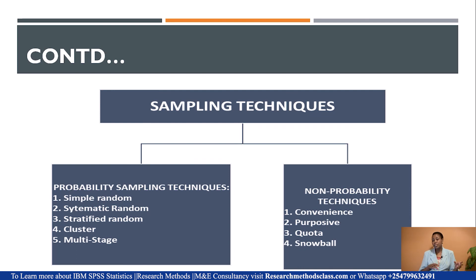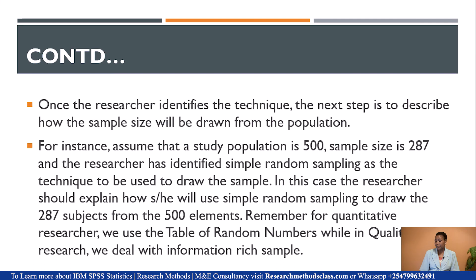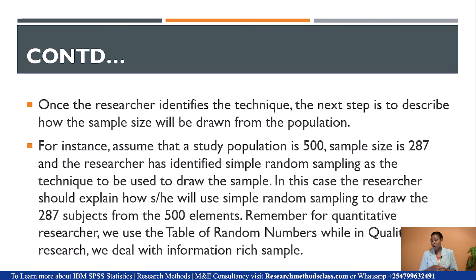Once you have identified the technique, the next step is to describe how you will draw the sample from the population. For example, assume a population of 500, a sample size of 287, and Simple Random sampling as the identified method. The researcher is expected to explain how Simple Random sampling will be used to draw the 287 subjects from the 500 elements — explaining how the 213 people who remain are excluded from the study.